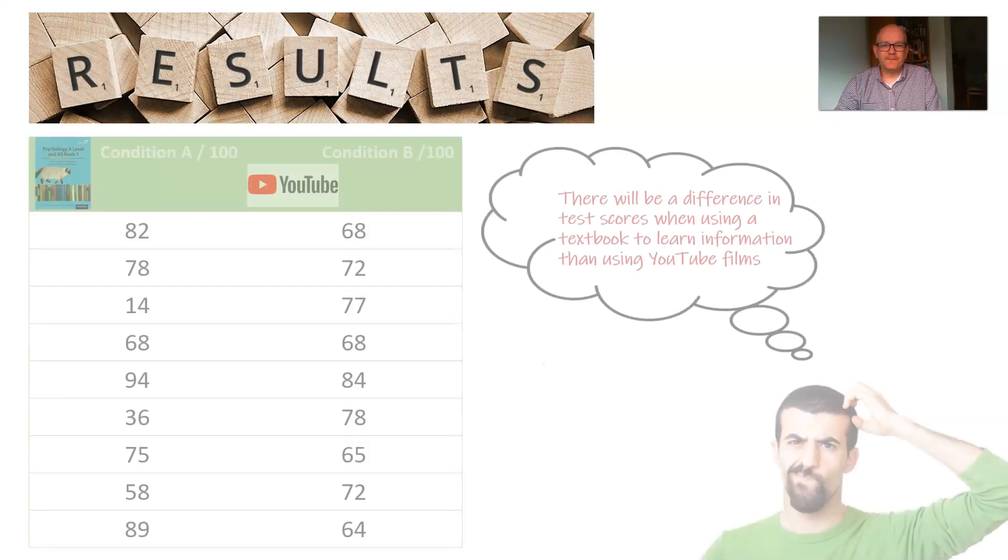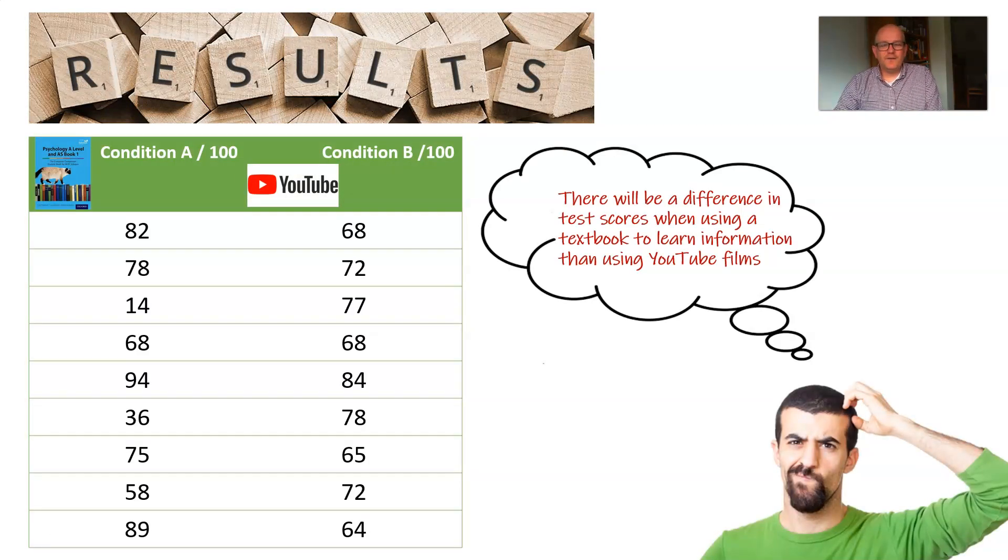I give them a test out of 100 and I find out who learns the most. So remember, I'm expecting to find a difference. My hypothesis says that there's going to be a difference in the test scores, whether they use a textbook or YouTube clip. I'm not quite sure which way it's going to go. That's why it's a non-directional hypothesis. And there's my data. Well, great. I've got some data. Does it support my hypothesis?